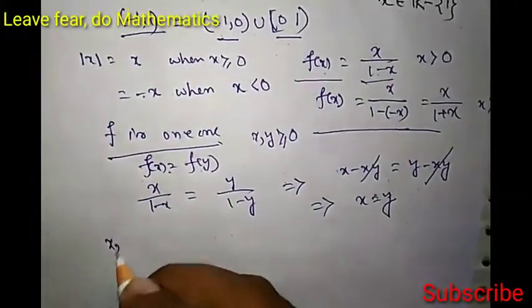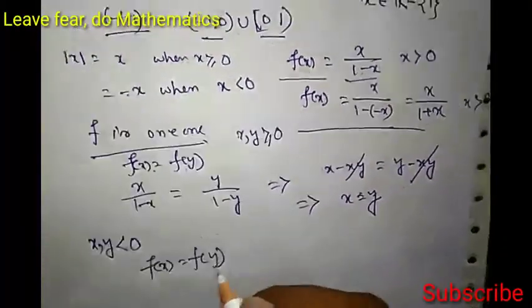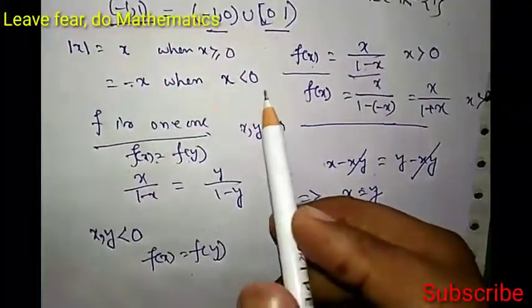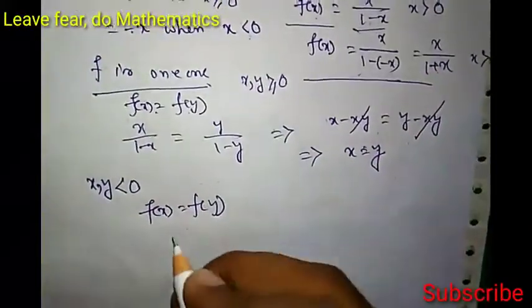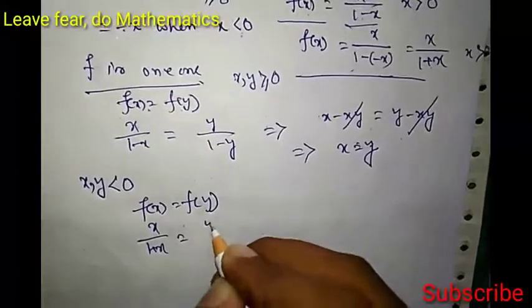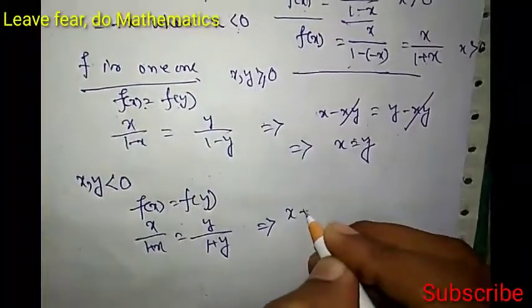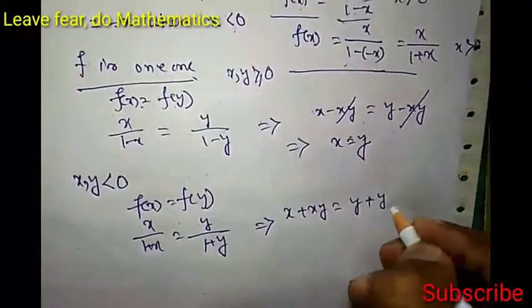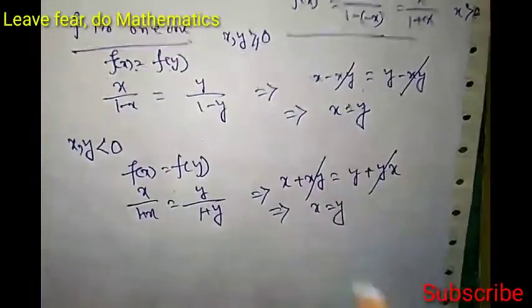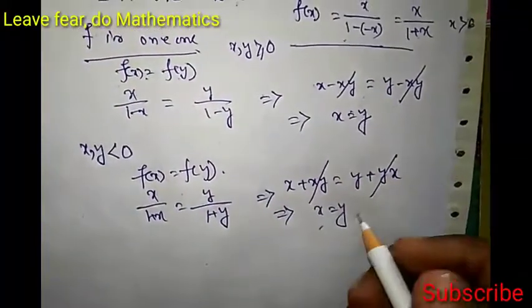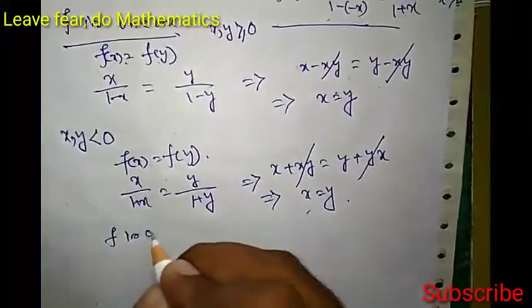Now take x and y both less than 0. Suppose f(x) = f(y). When x is less than 0, f(x) = x over (1 plus x) and f(y) = y over (1 plus y). Simplifying, we get x plus xy = y plus yx. The xy terms cancel from both sides, giving x = y. Again, f(x) = f(y) implies x = y. So in both cases, f is clearly one-one.